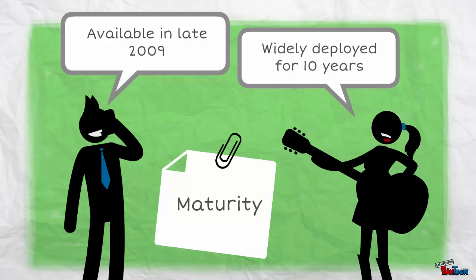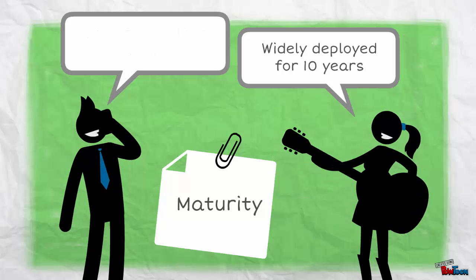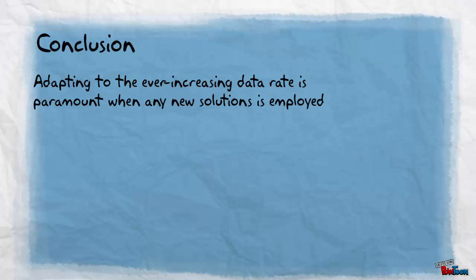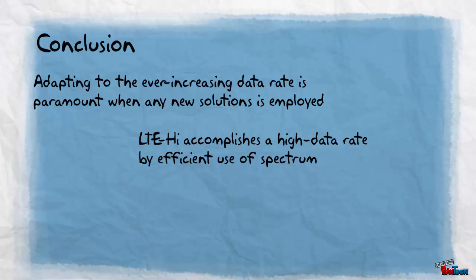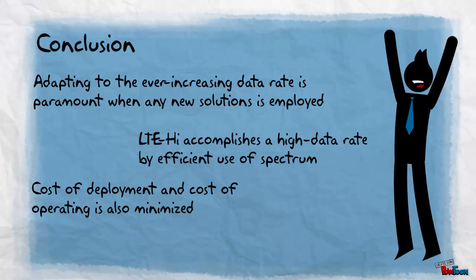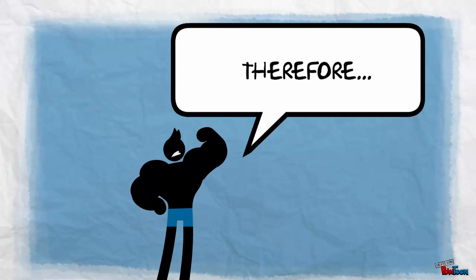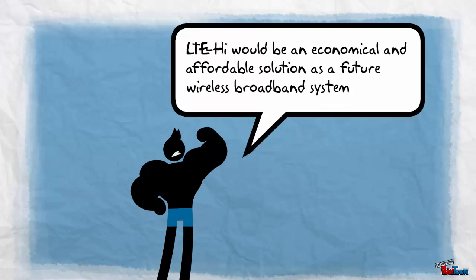In conclusion, adapting to the increasing data rate in networks has been identified as the most important issue. Through efficient spectrum use, LTE High is able to accomplish a high data rate and cost enhancements to lower the cost of operating an LTE High network. Hence, it is concluded that LTE High would be an economical and affordable solution as a future wireless broadband system.